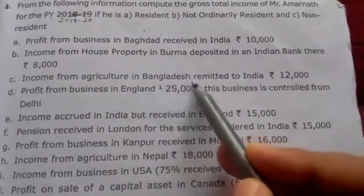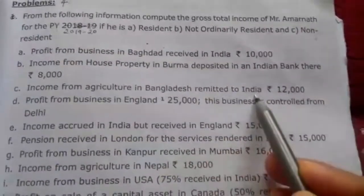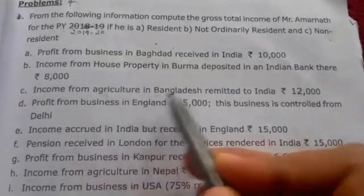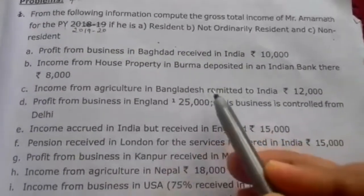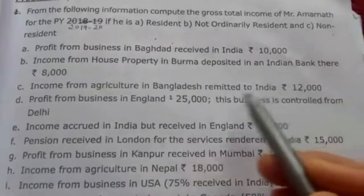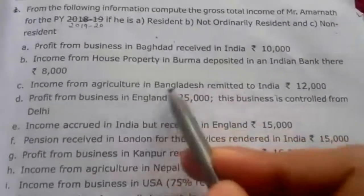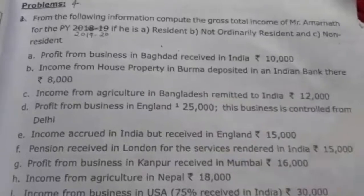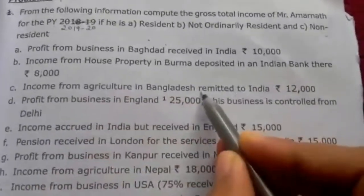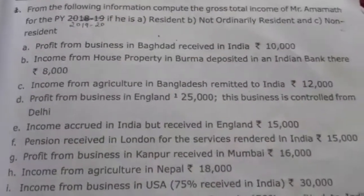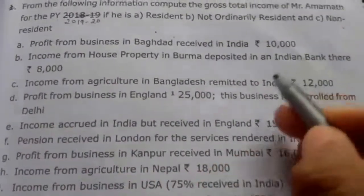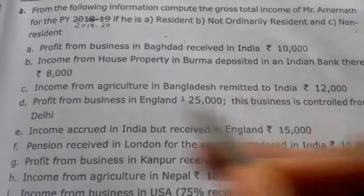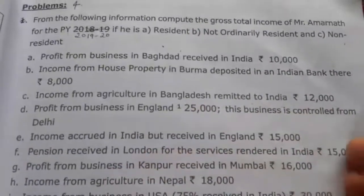Third, income from agriculture in Bangladesh, remitted to India Rs. 12,000. The agricultural land is situated outside India. Remitted to India does not mean it is received or accrued in India — it simply means the money was brought to India. So Rs. 12,000 is taxable only in the hands of the ordinarily resident, not the not ordinarily resident or non-resident.